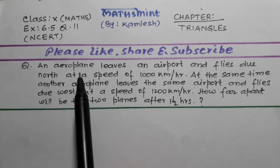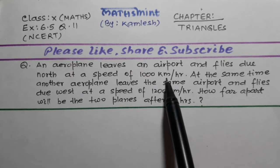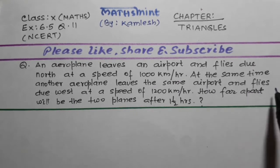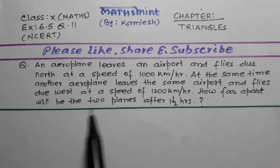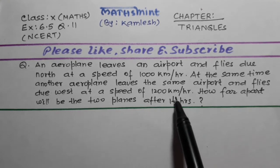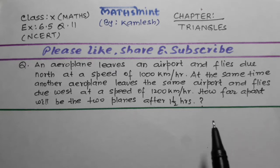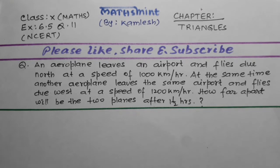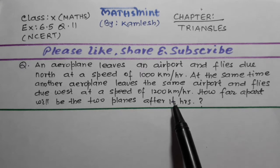The question is: an aeroplane leaves an airport and flies due north at a speed of 1000 km per hour. At the same time, another aeroplane leaves the same airport and flies due west at a speed of 1200 km per hour. How far apart will the two planes be after one and a half hours?